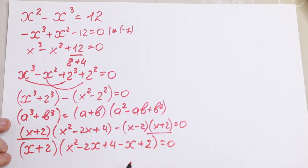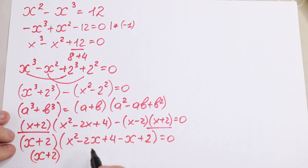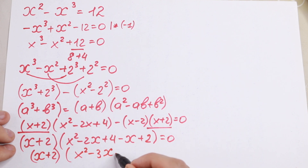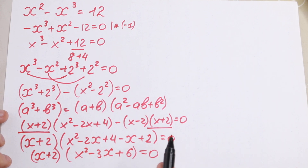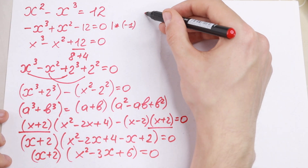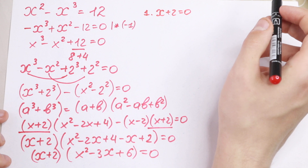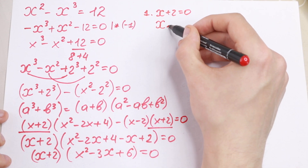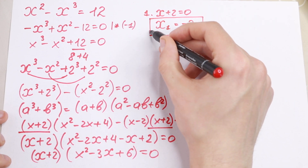Simplifying the bracket gives us (x + 2)(x² − 3x + 6) equal to zero. Since the product equals zero, either factor is zero. Setting x + 2 = 0 gives us our first root: x₁ = −2.